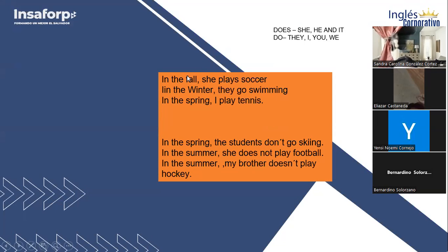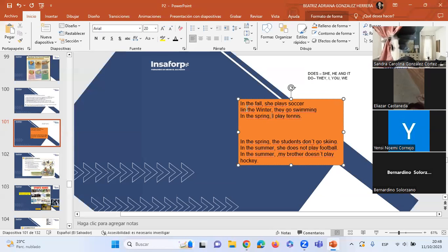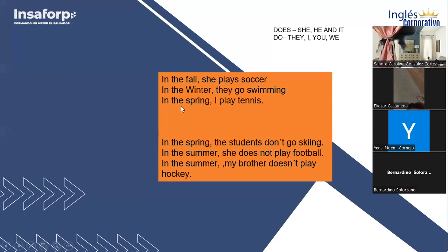To summarize our examples: In the fall, she plays soccer. In the winter, they go swimming. In the spring, I play tennis. In the negative form: in the spring, the students don't go skiing. In the summer, she does not play football. In the summer, my brother doesn't play hockey. Excellent!